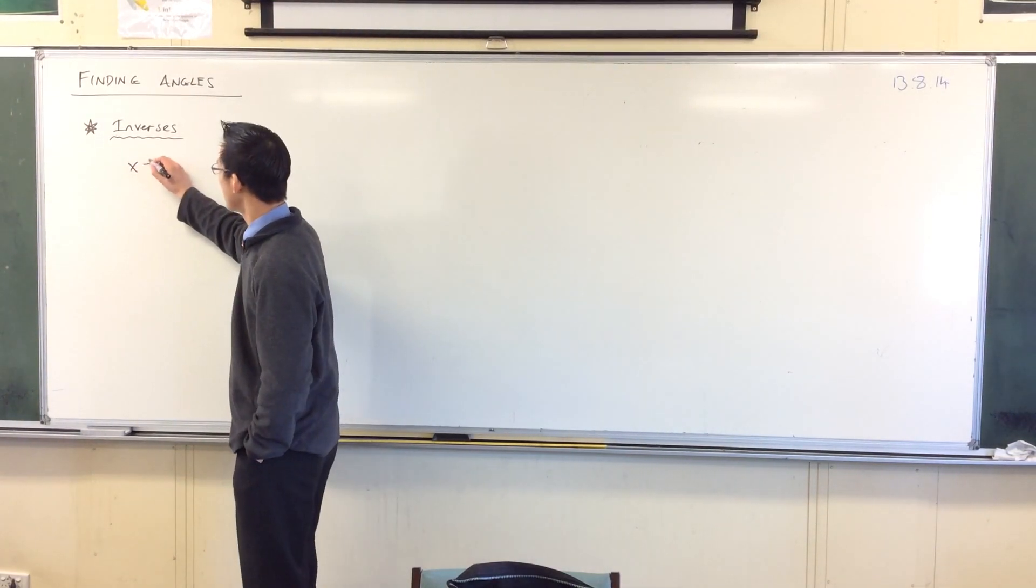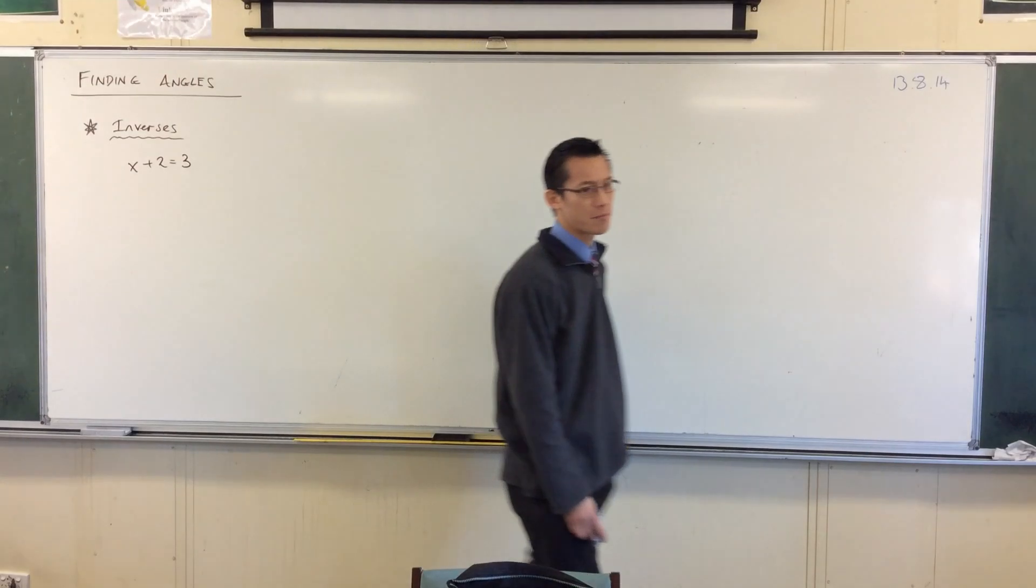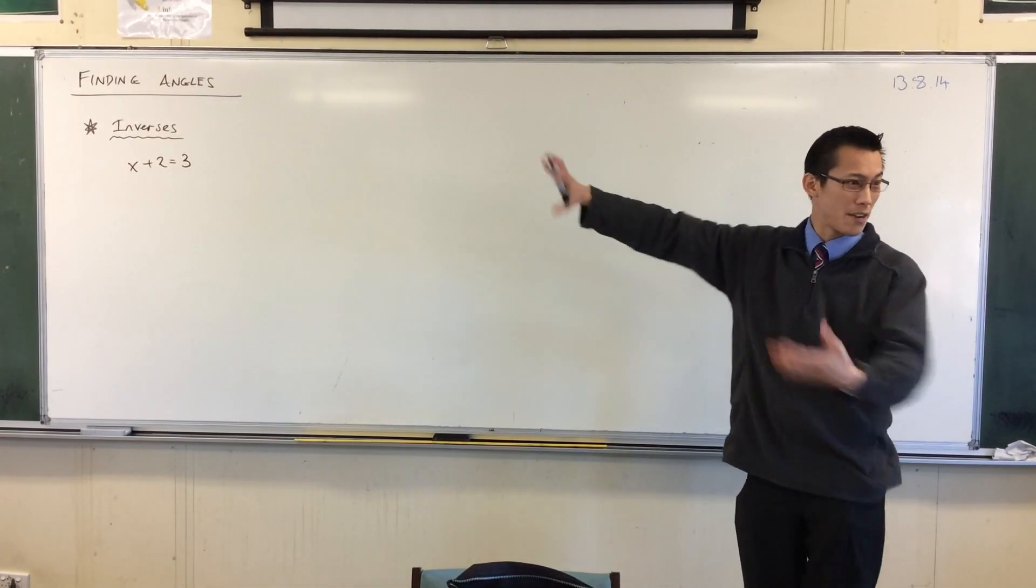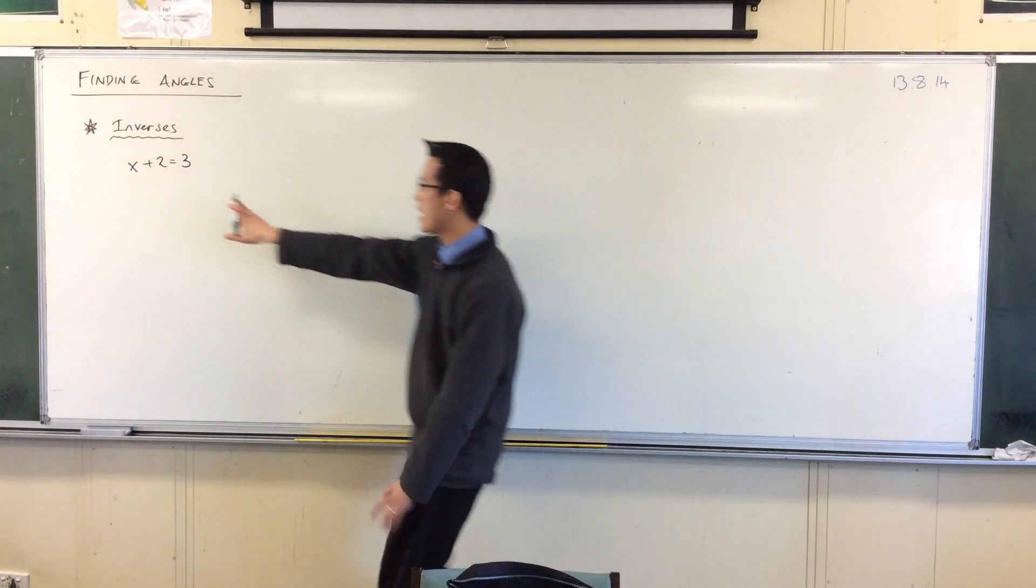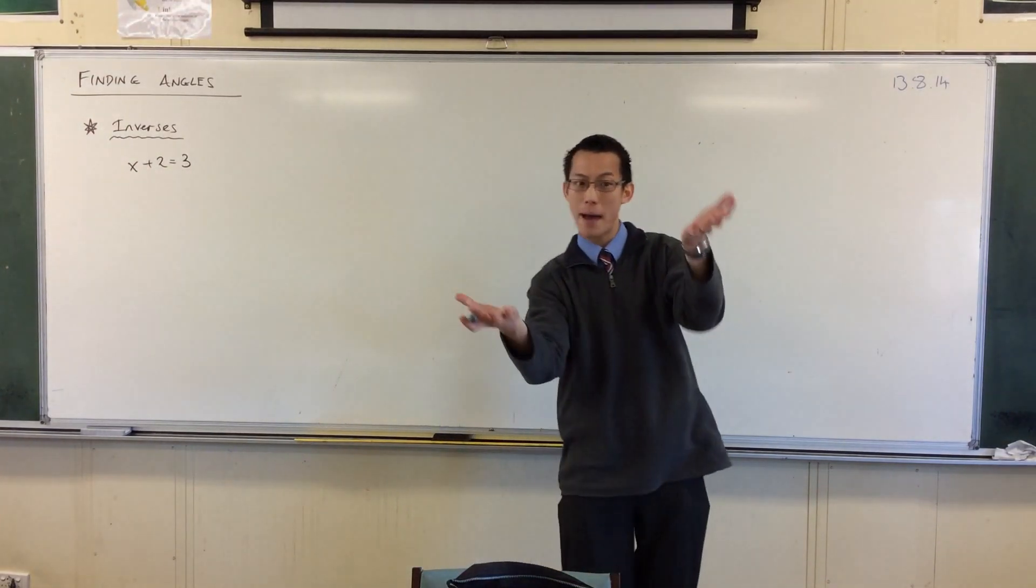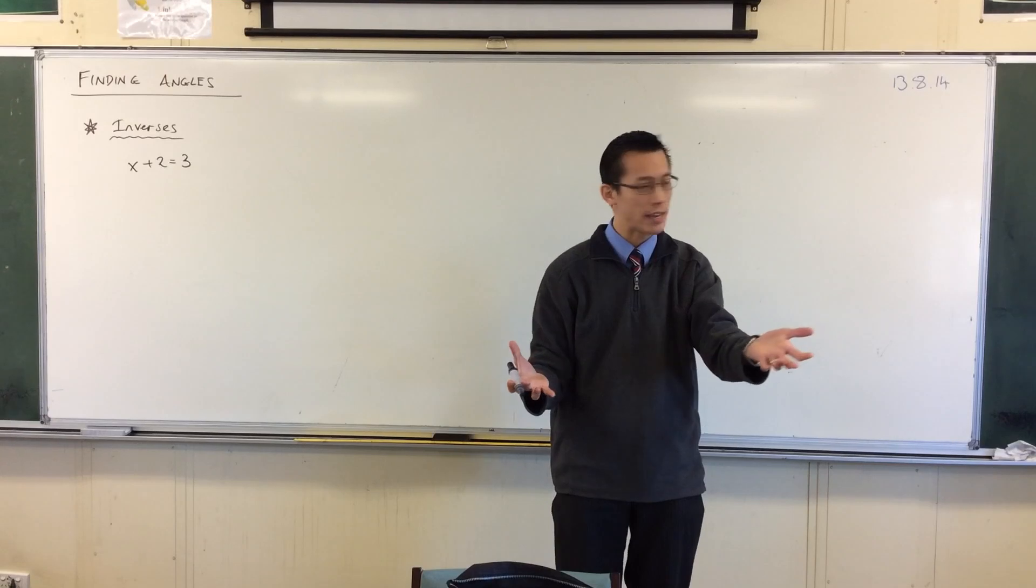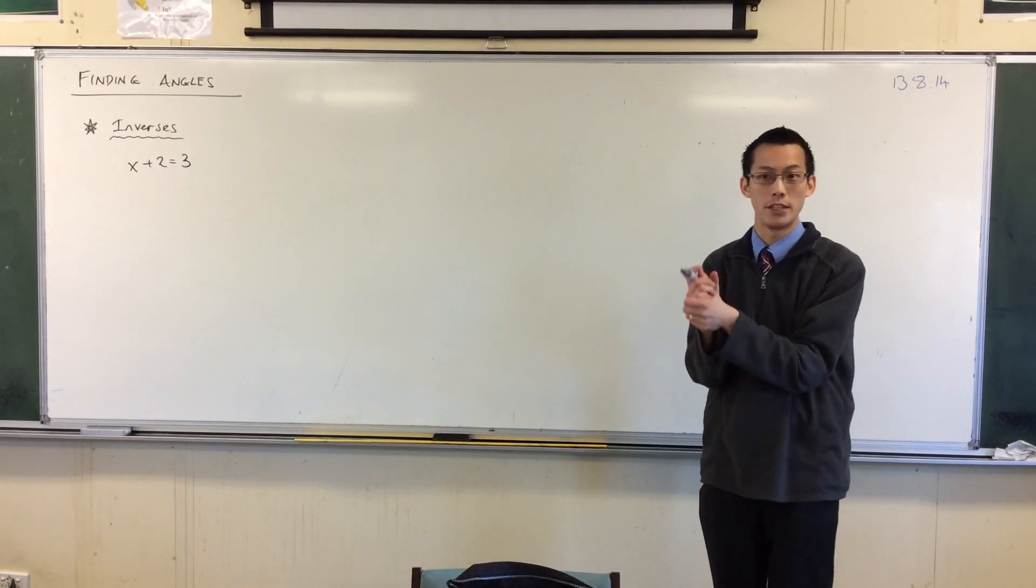Now if you have something like this, a simple one. x plus 2 equals 3. And to solve an equation like that, what we really want to do is find the value of whatever that polynomial is. Now we're trying to think of an equation, equal side, as kind of like a set of scales, and it's balanced. So if you do something to one side, you do it to the other. So what things should we do to both sides here to get x by itself and solve it?